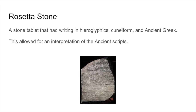We discovered how to interpret hieroglyphics when Napoleon and his army stumbled across this wonderful piece of history, the Rosetta Stone. It was a stone tablet that had writing in hieroglyphics, cuneiform, and ancient Greek. Since the French who discovered it could read and interpret ancient Greek, it allowed them to interpret the hieroglyphics, and that is how we know how to read them today.